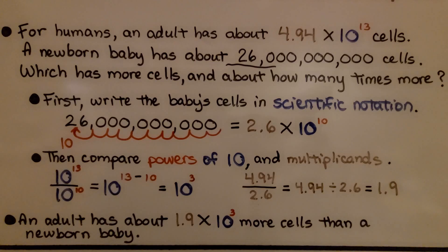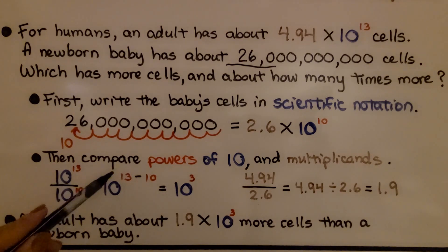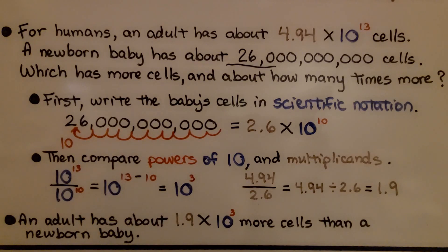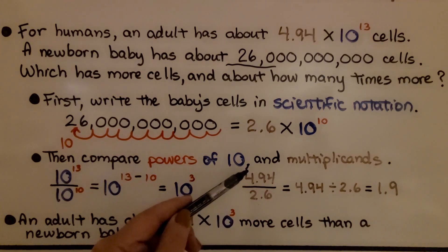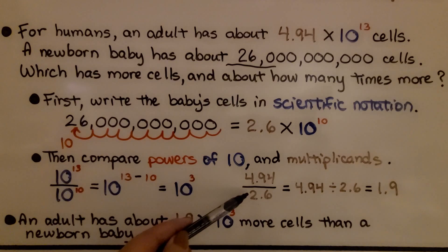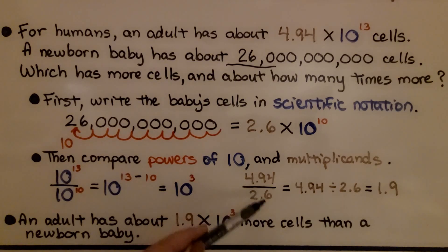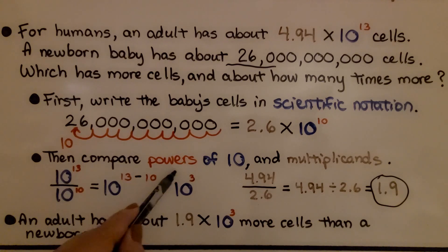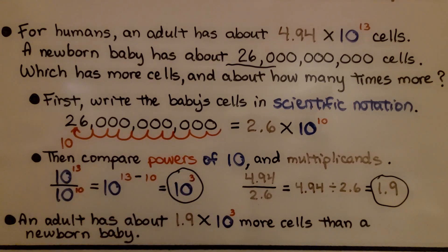Then we compare the powers of 10 and multiplicands. We have 10 to the 13th power over 10 to the 10th power, which is 10 to the 13 minus 10, giving us 10 to the third power. We compare the multiplicands: 4.94 divided by 2.6 gives us 1.9. An adult has about 1.9 times 10 to the third power more cells than a newborn baby.